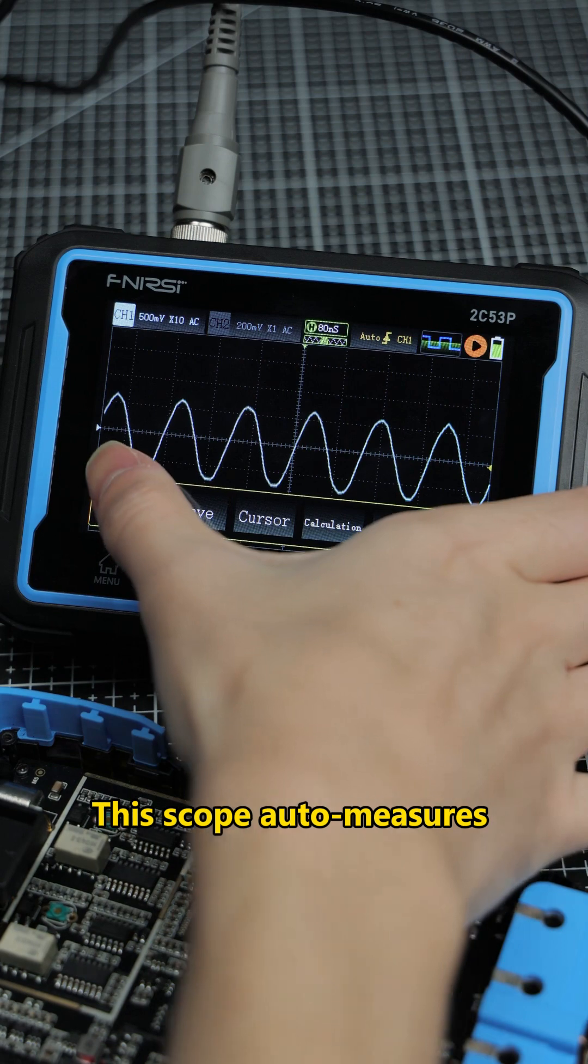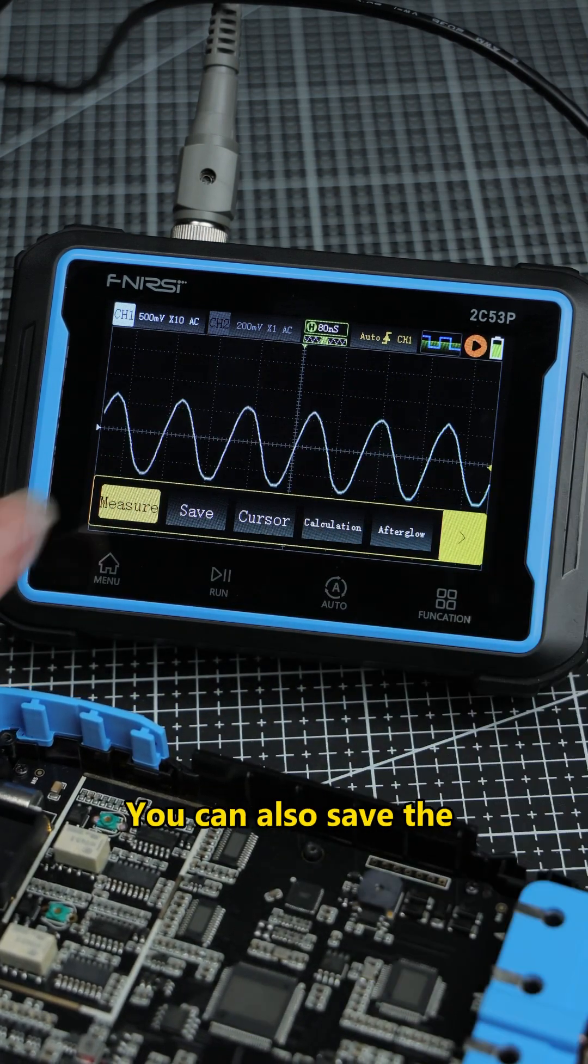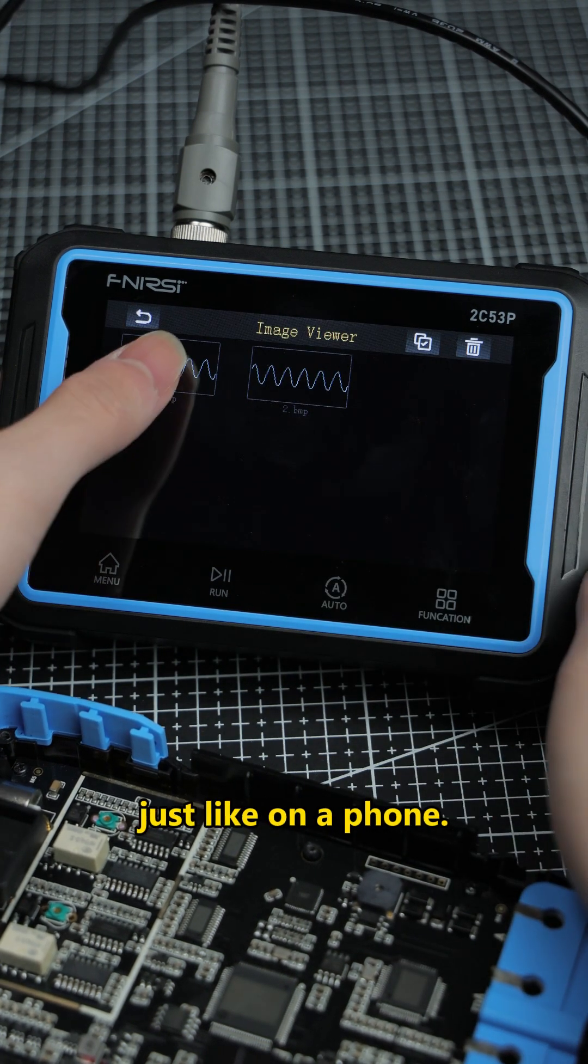This scope auto-measures 12 parameters. You can show or hide them. You can also save the waveform as an image and view it later just like on a phone.